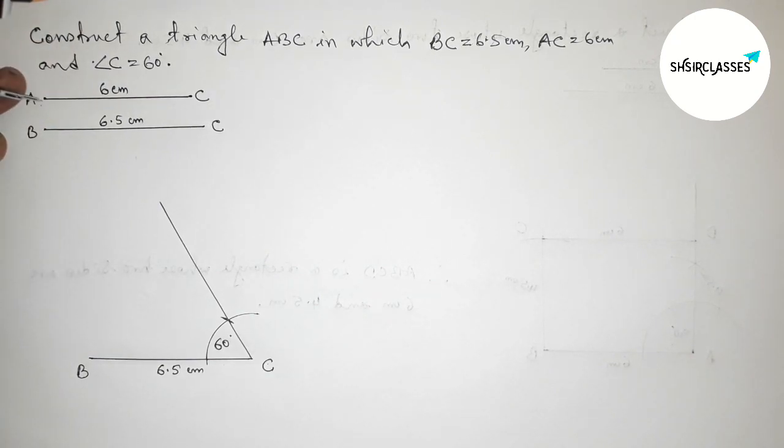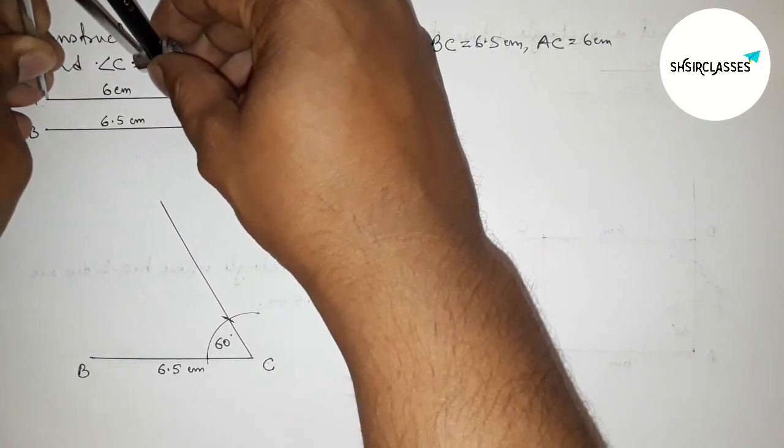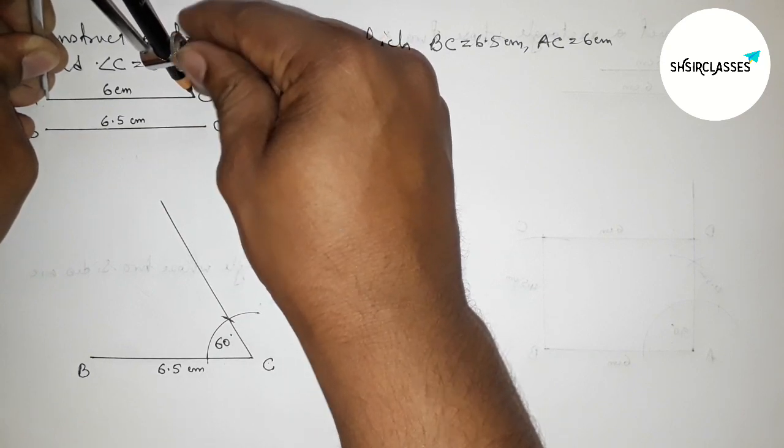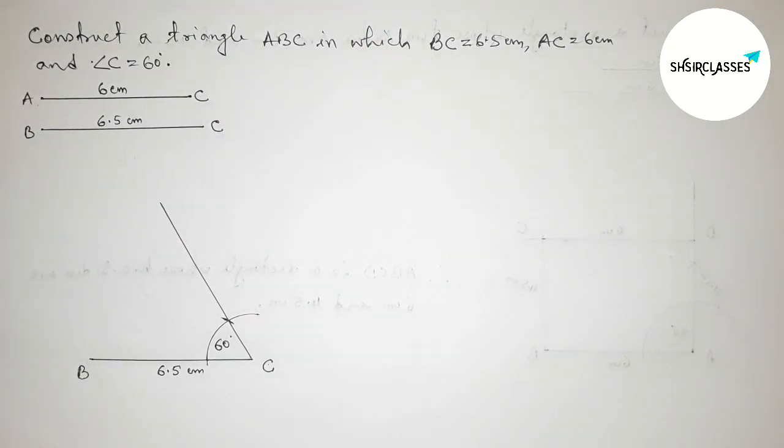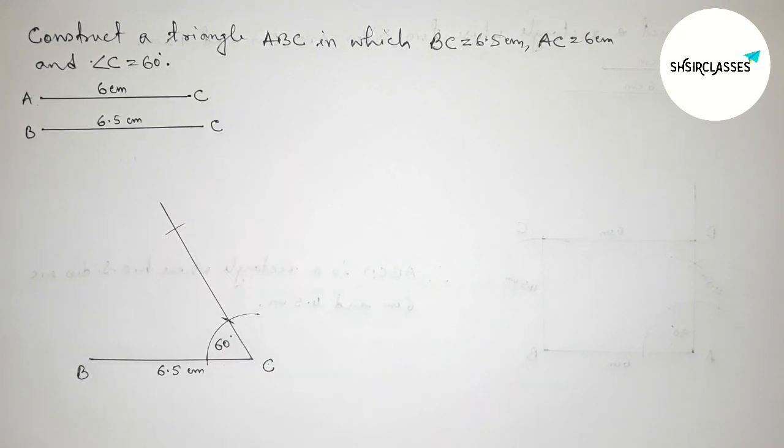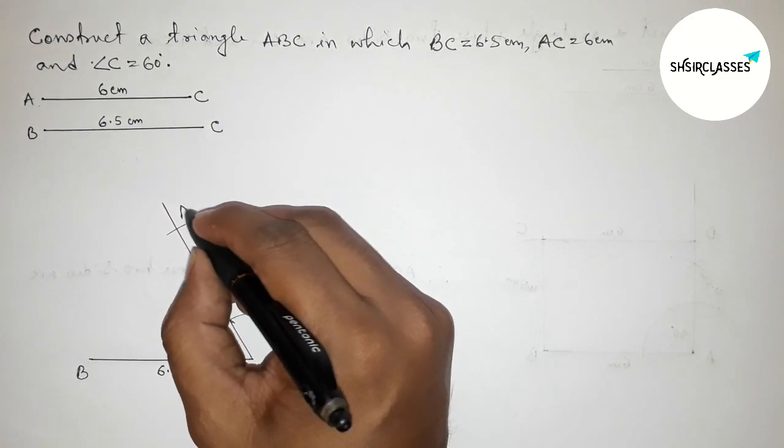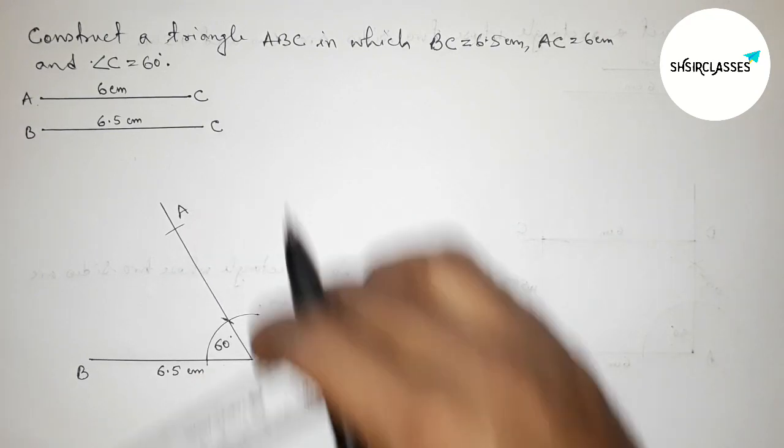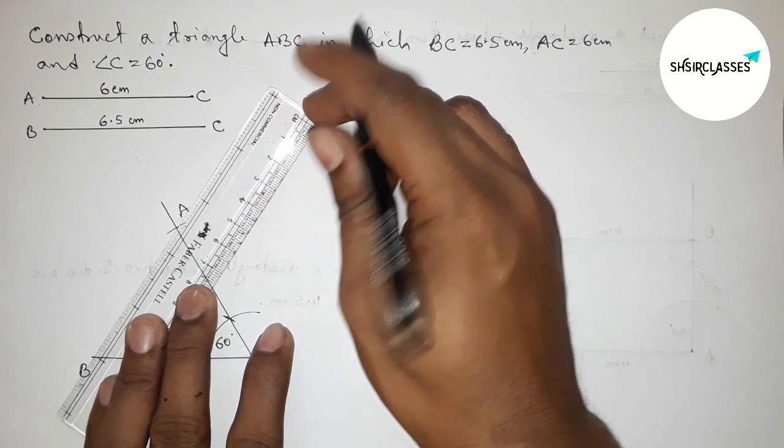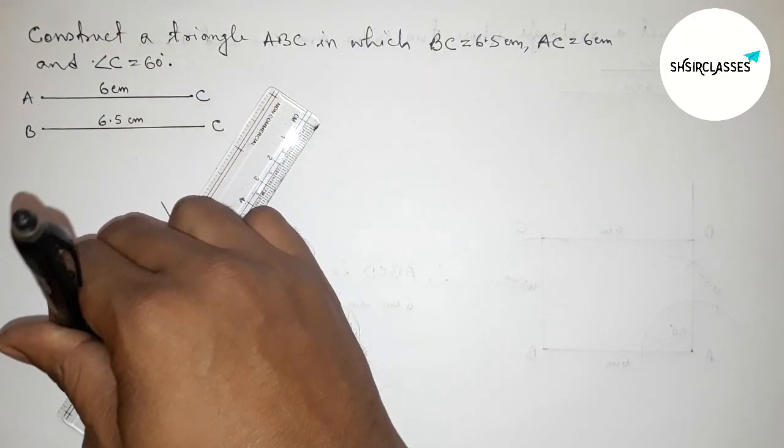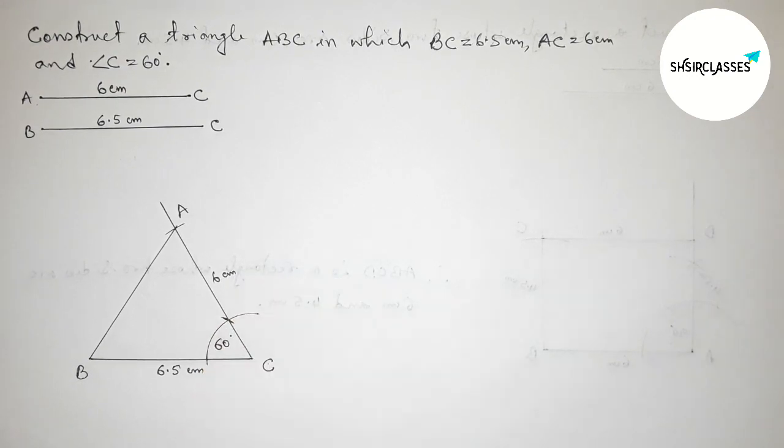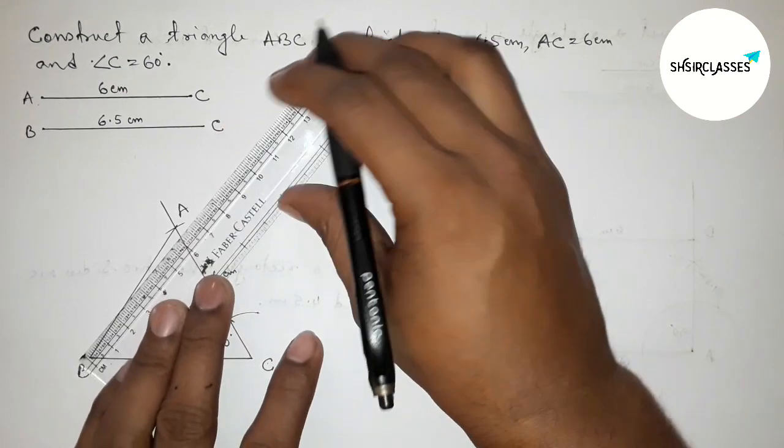Now taking AC equals 6 centimeters with the help of compass and putting the compass on the point C and cut here. So now taking here point A and next joining the side AB to get here the triangle ABC. So joining this, and here AC equals 6 centimeters.